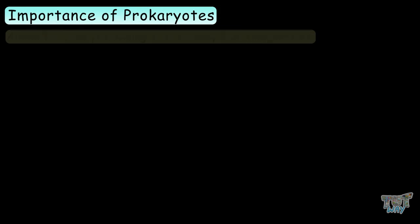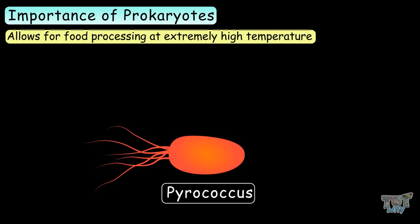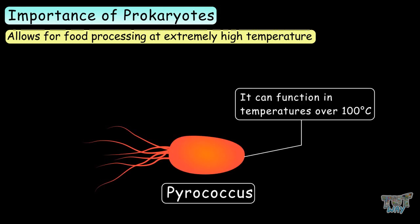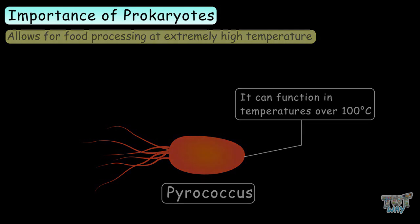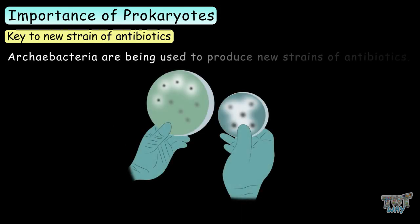Prokaryotes also allow for food processing at extremely high temperatures. Prokaryotes like Pyrococcus, a species that can function in temperatures over 100 degrees Celsius, are used for food processing at extremely high temperatures, such as with whey and other dairy products. Prokaryotes are also key to new strains of antibiotics — archaea bacteria are being used to make new strains of antibiotics that will be different from the antibiotics used now.